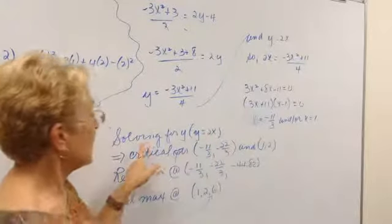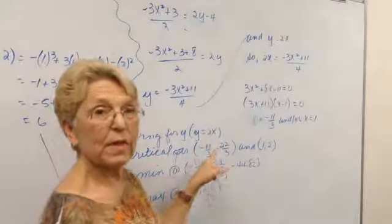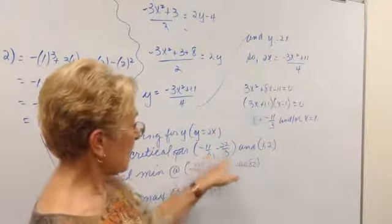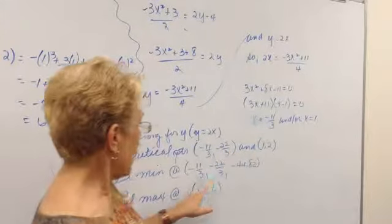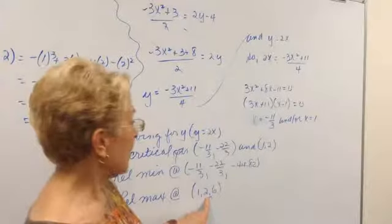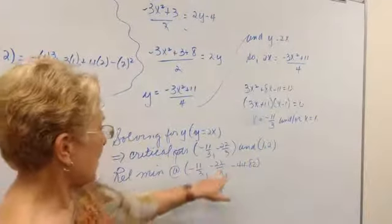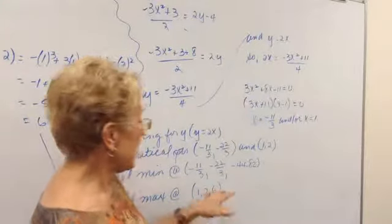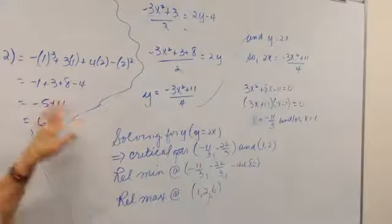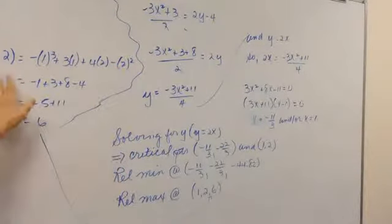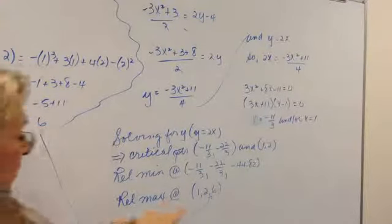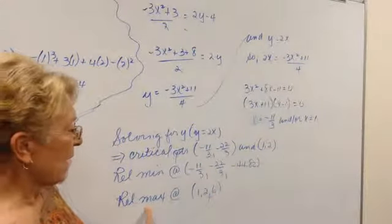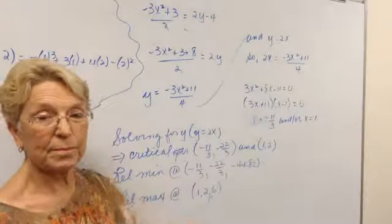Now what we do with that information is we need to find the y that goes with it because we have a function in x and y. So using y equals 2x, we have our x and twice that for y. So now we need to plug these in and find out which one's a relative max and which one's a relative min. And you plug them back into the f function. So here's an example of f evaluated at 1, 2, and gives us a 6, which you see here. So comparing just these two values, we label this a relative max and this one a relative min.